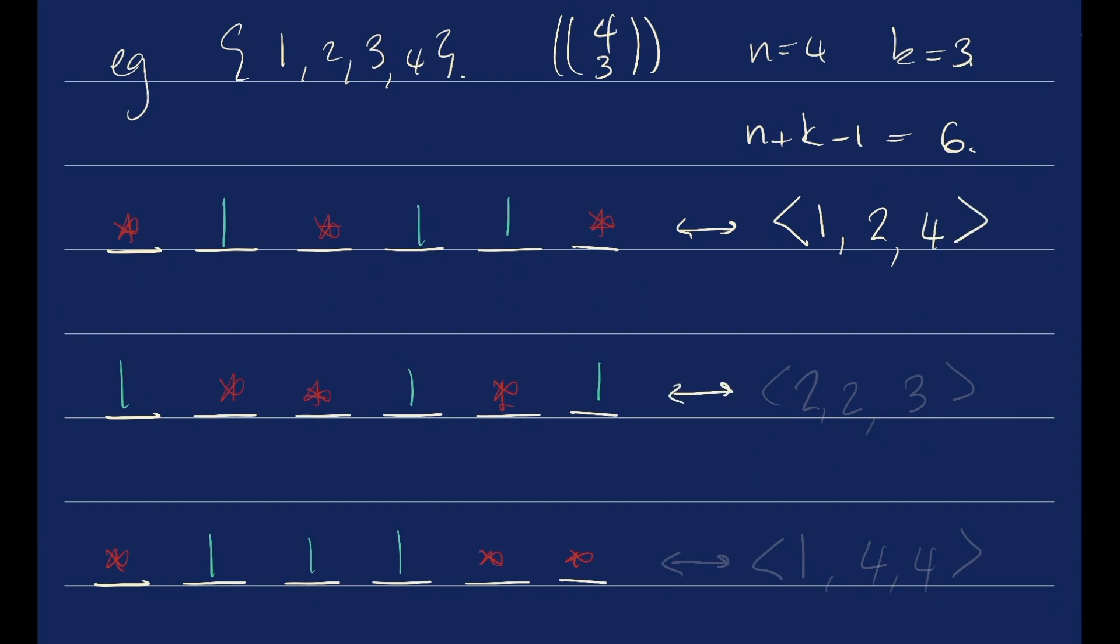This one is going to be no 1s, two 2s, and then a 3. And this corresponds to 1, no 2s, no 3s, 4, 4.